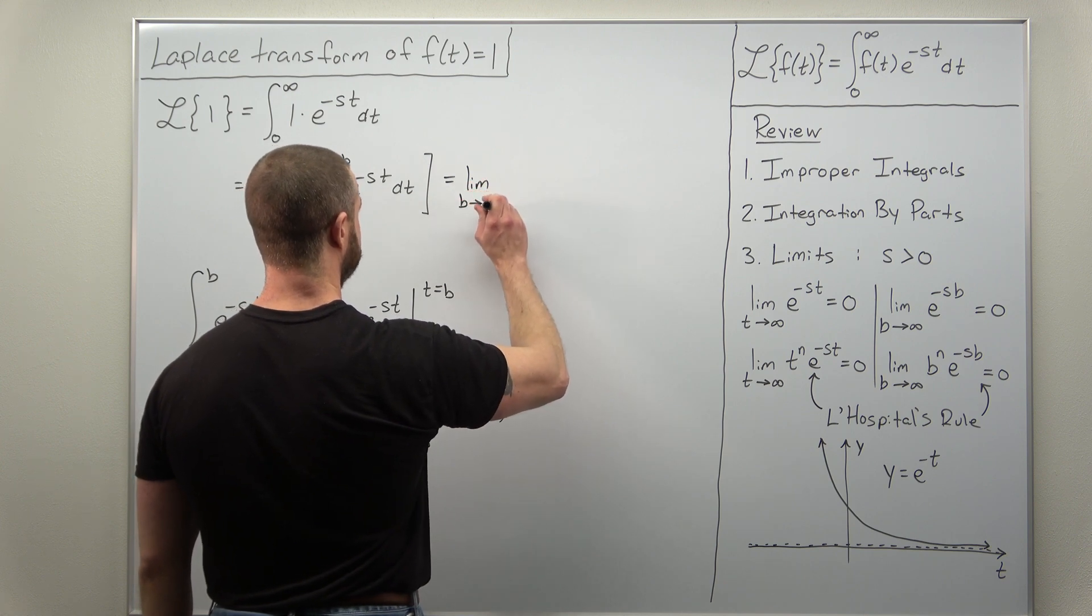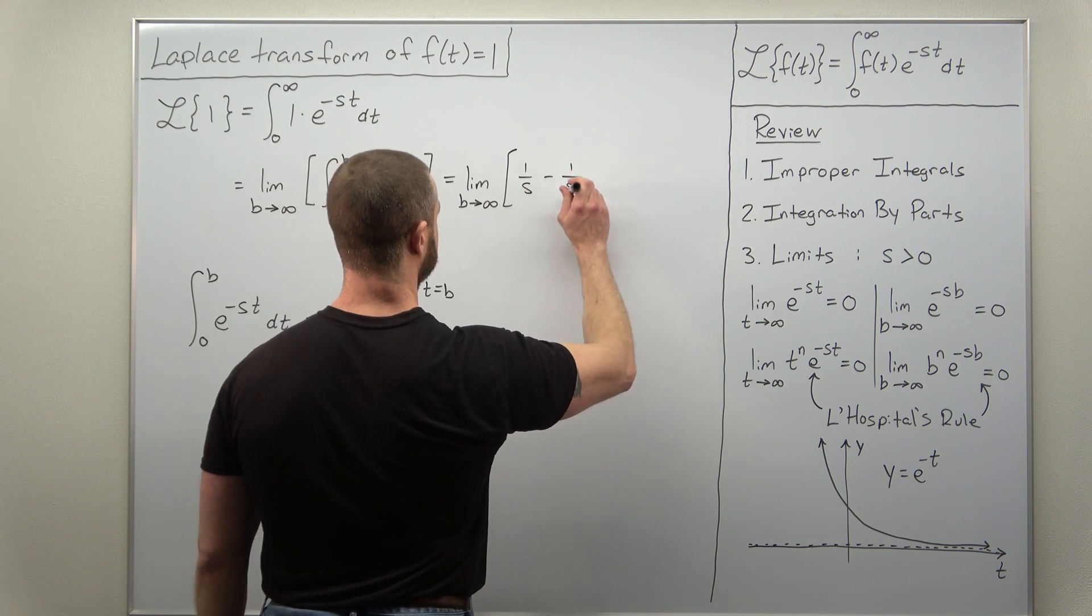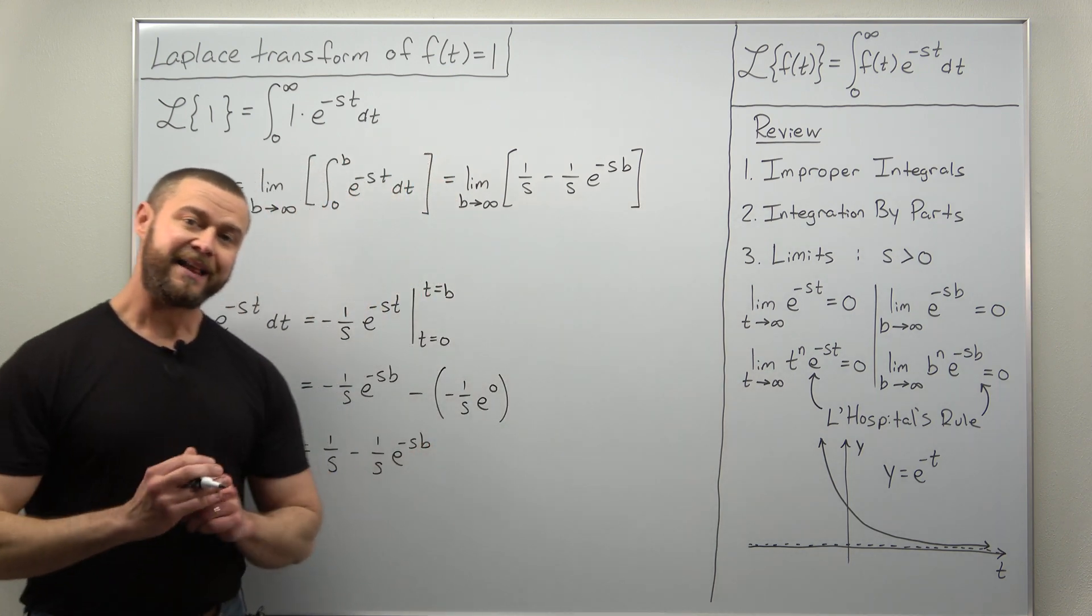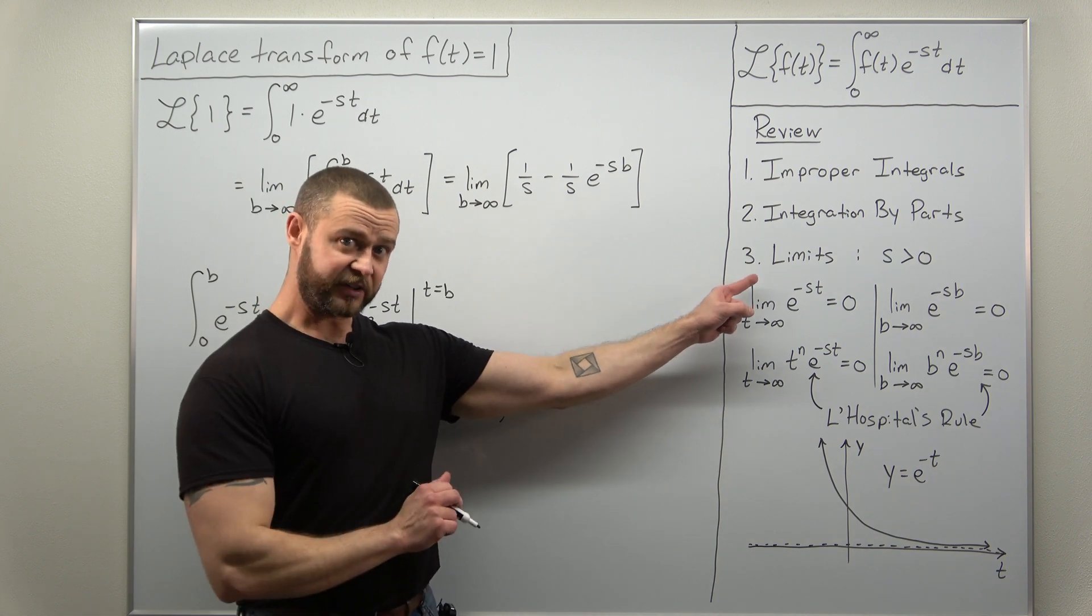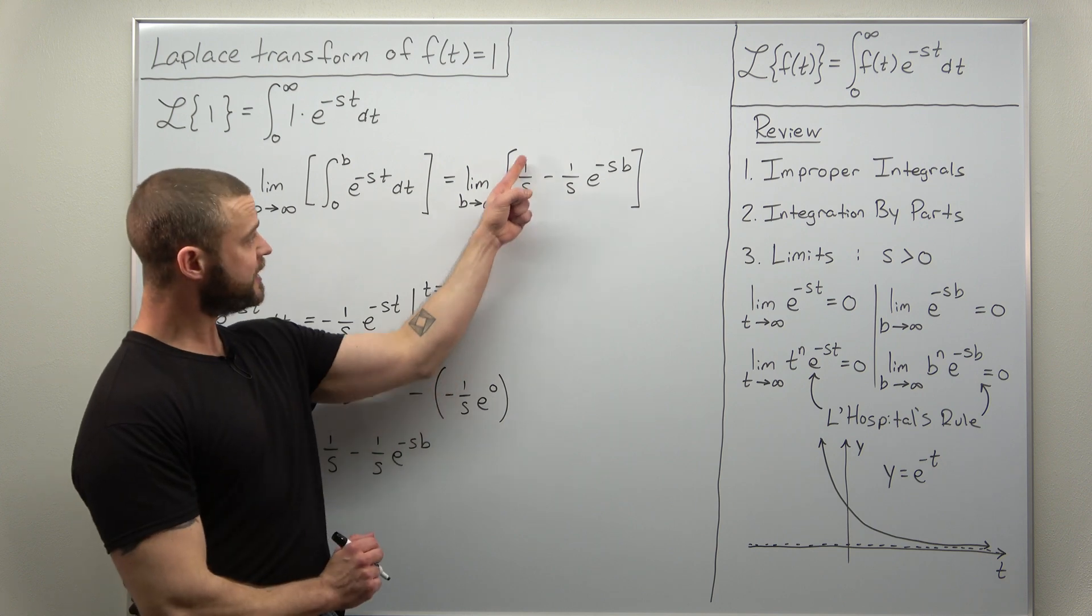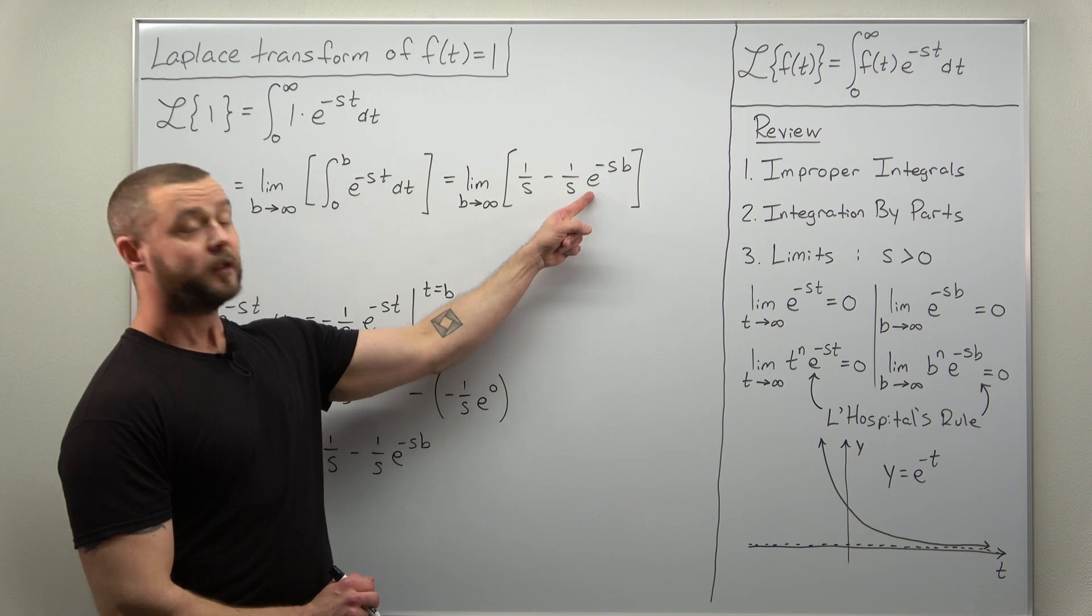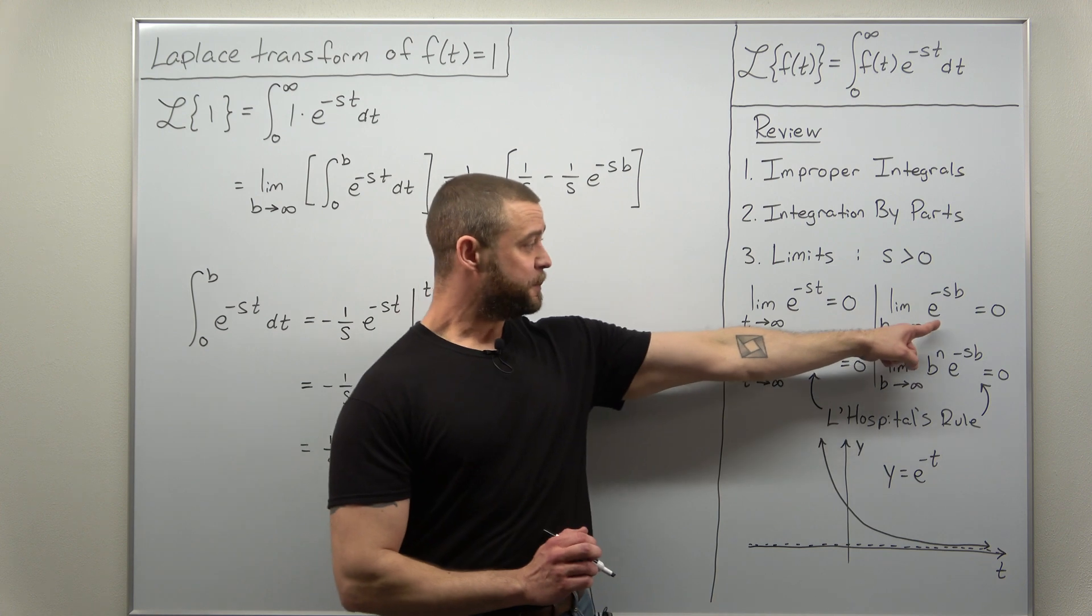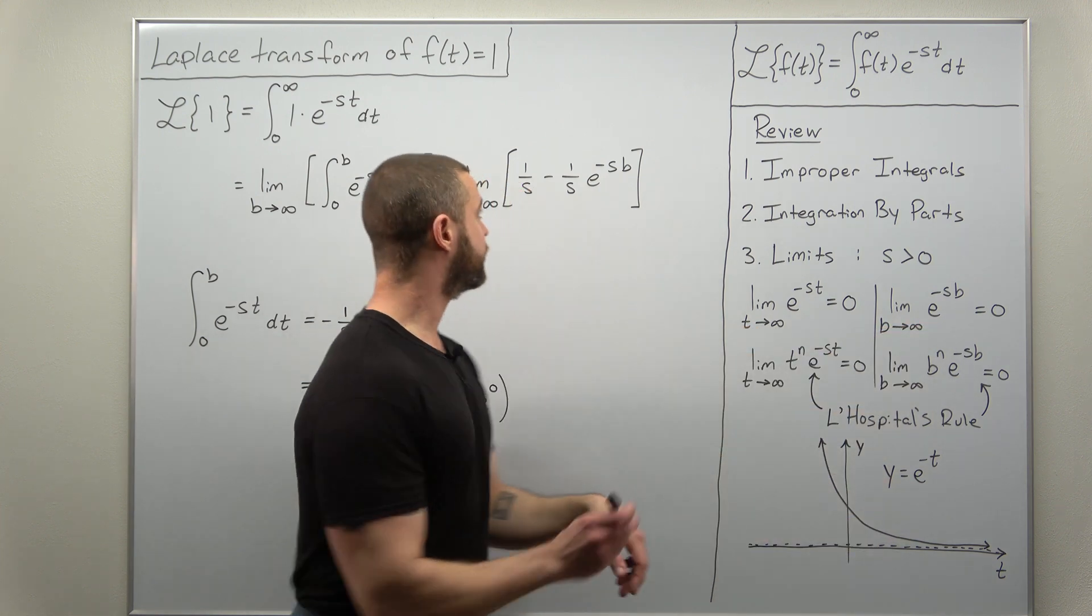So we have a limit as b approaches infinity. And at this point we now think back to some of our basic limits going all the way back to maybe calculus one. b is approaching infinity, so this first part, one over s, is constant. It's the exponential part here that contains b. As b approaches infinity, that decreasing exponential, that's going to approach zero.